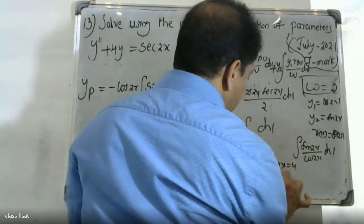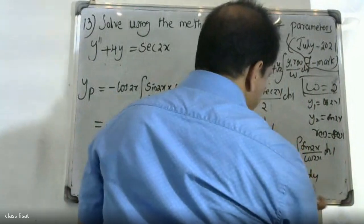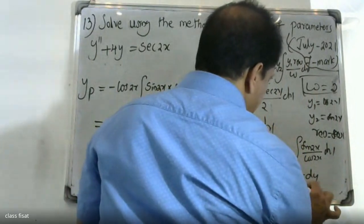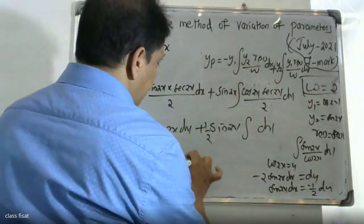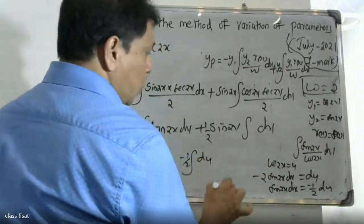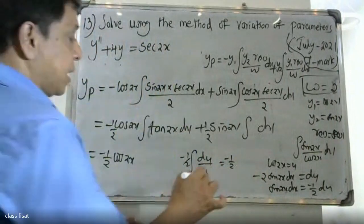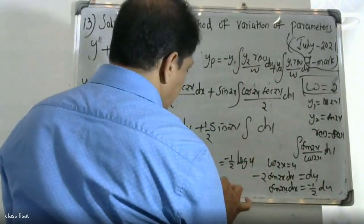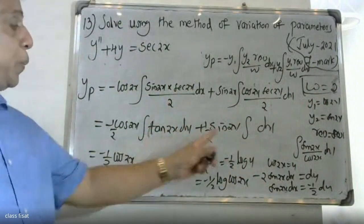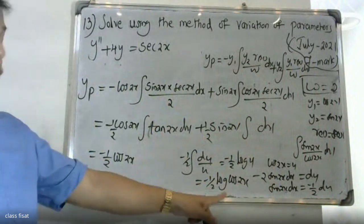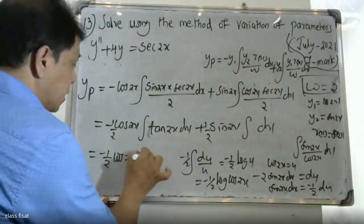Let u equal to cos 2x. Differentiating, du equals minus sin 2x dx times 2, so sin 2x dx equals minus 1 by 2 du. Substituting, the integral of sin 2x by cos 2x dx becomes minus 1 by 2 times integral of 1 by u du, which gives minus 1 by 2 log cos 2x. Therefore the integral of tan 2x equals minus 1 by 2 log cos 2x.